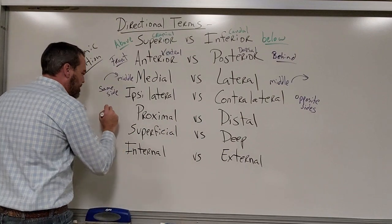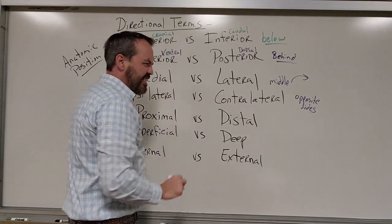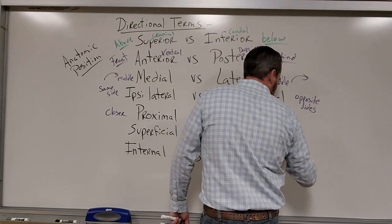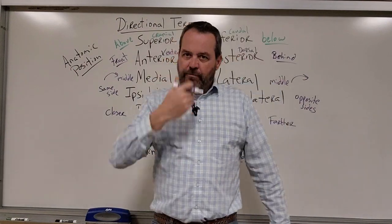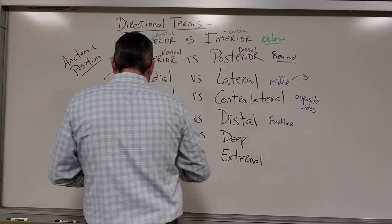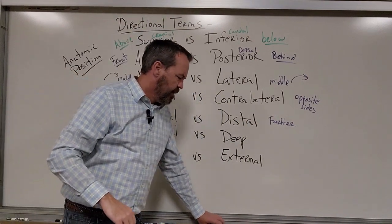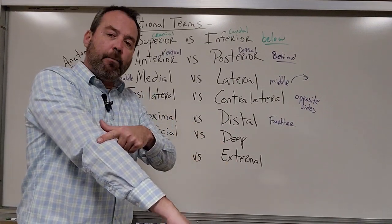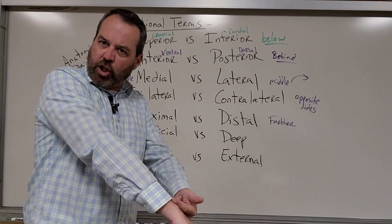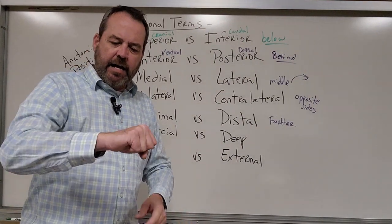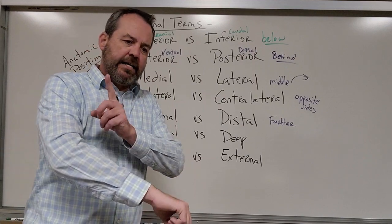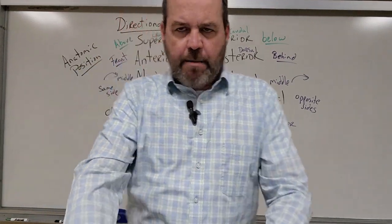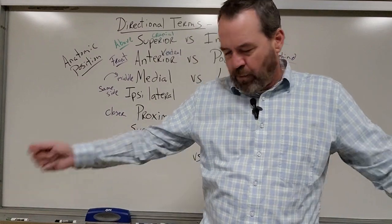Proximal versus distal. Proximal means closer. With distal, think of the word 'distant' because distal actually means farther away — farther from that midline. So compared to my wrist, my elbow is proximal; it is closer to the rest of my body. Compared to my elbow, my wrist is distal — it is further away from my body.